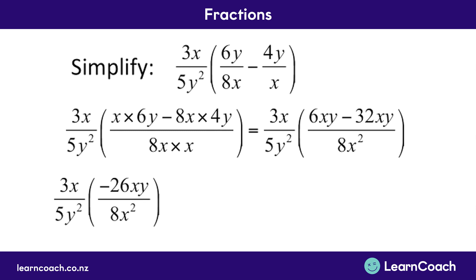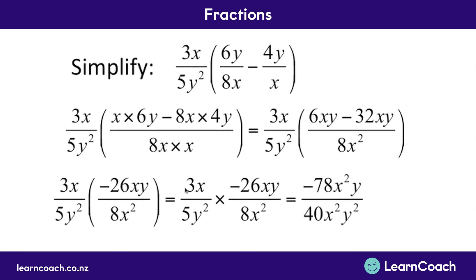We can simplify further: we have 6xy's and we minus 32xy's, so altogether that makes negative 26xy. Great, so we've done our subtraction part. Now we just need to do the multiplication part — top times top and bottom times bottom. We're going to have 3x multiplied by negative 26xy on top, and 5y squared multiplied by 8x squared on the bottom. So 3 times negative 26 equals negative 78, and x times x gives us x squared with a y left over. On the bottom, 5 times 8 is 40, and y squared times x squared gives us x squared y squared. We can divide both numbers by 2 giving negative 39 over 20, and we cancel out the x squared terms and one y, leaving us with a final answer of negative 39 divided by 20y.